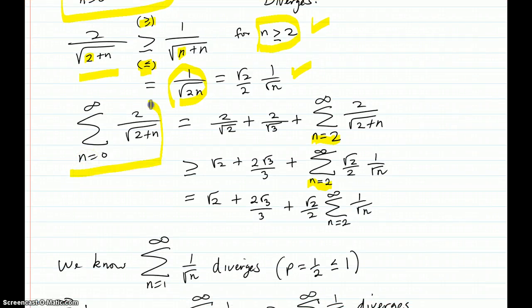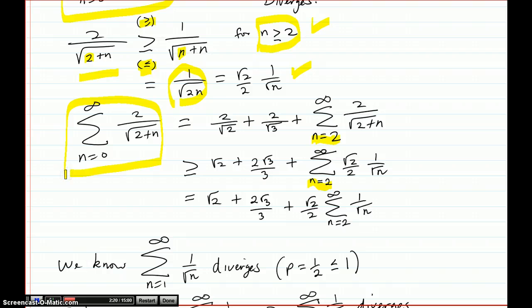So back to our series, I want to compare it against this series here, but that series is going to only be good for n greater than or equal to 2. So I have to burn off a couple of terms of my series so that it will start at 2 instead of back at 0. So when n equals 0, I plug in for 0 and I get 2 over the square root of 2. That's where that term came from. n equals 1 is the next one. That's 2 over the square root of 3.